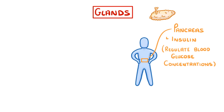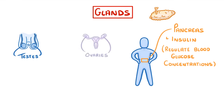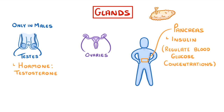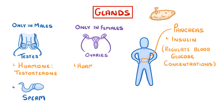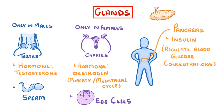The last two glands that we need to talk about are the testes and the ovaries, and these are both going to come up again in our video on the menstrual cycle. The testes are only found in males, and they have two main jobs: producing the hormone testosterone, which controls puberty, and producing the male gametes — sperm — for reproduction. The ovaries, meanwhile, are found only in females. Their main role is to produce oestrogen, which influences puberty and the menstrual cycle. They also hold the female gametes, egg cells.